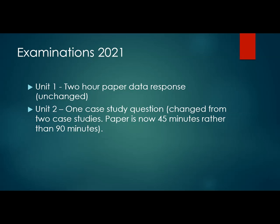Unit one is a two-hour paper of data response questions. That's going to remain unchanged, other than the fact that they won't ask questions on the areas of specification that they've taken out. Unit two was previously two case study questions and an hour and a half, and that's now been changed to one case study question and the length of the paper has been halved. So hopefully that will answer your questions on the changes to the specification for 2021.